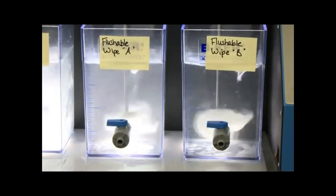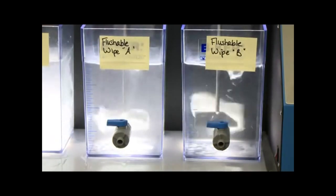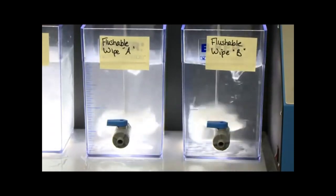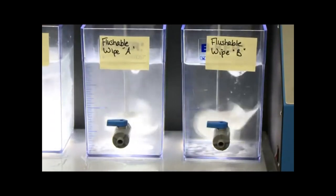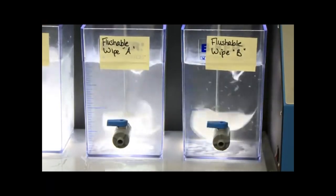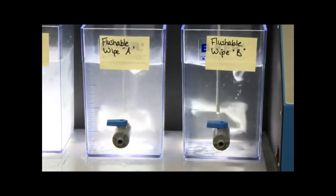They've been spinning for one or two minutes now, and they're completely intact. What you're seeing in the cloudiness in flushable wipe A is some lotion that's coming off of it. This has been agitated as much as it would have been if it had gone through your toilet flush, and they're still completely whole.